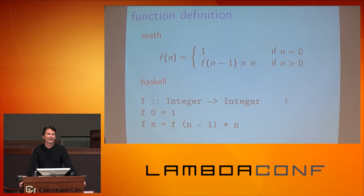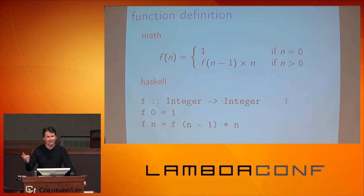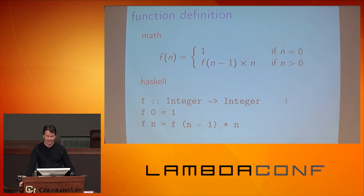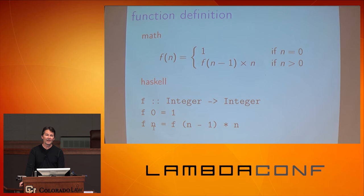So here we go. We start off with really basic stuff: how do you define a function? In math, we've all seen the factorial function — it just has two cases. In Haskell — and I'm not going to assume you know any Haskell — it says f is a function from integer to integer. Given zero, it returns one; for any other n, it returns a recursive call to f with n minus one, times n.